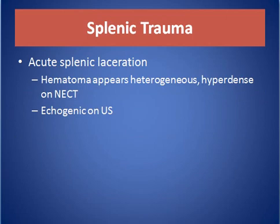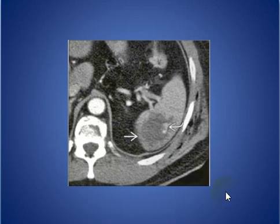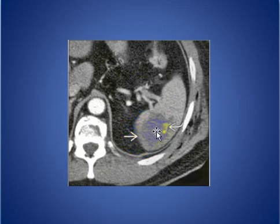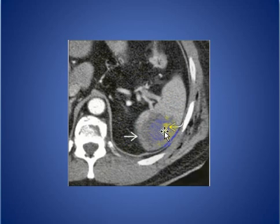Acute splenic trauma with laceration: hematoma appears heterogeneous and hyperdense on non-contrast enhanced CT scan, and echogenic on ultrasound. As seen here on axial CT in arterial phase, a hyperdense hematoma within the enhanced spleen with a focal area of increased density indicating active bleeding.